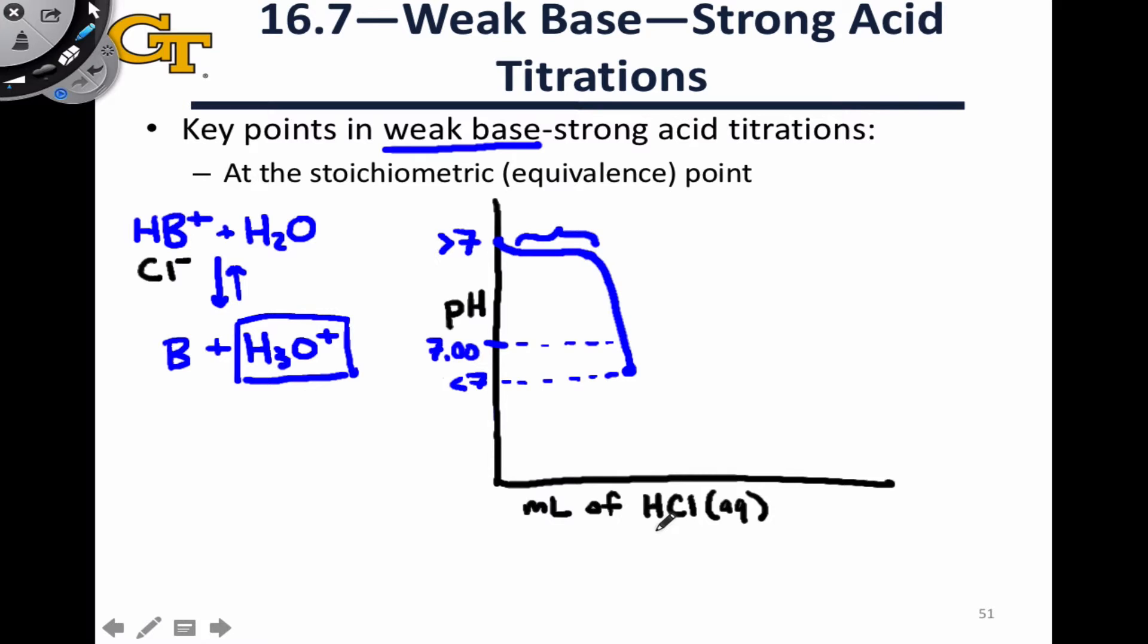So this situation at the stoichiometric point is equivalent conceptually to a situation in which we started with the acidic salt, HB+ Cl-, say as a solid, and dissolved it in water at a concentration equal to the original concentration of B at the initial point. This is useful conceptually because it means you can treat this situation at the equivalence point like a pH of a salt solution problem, which we've looked at previously.